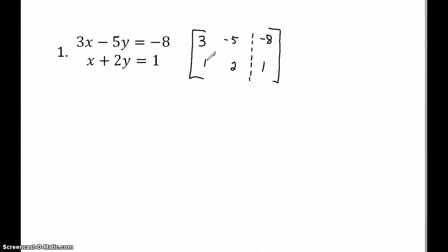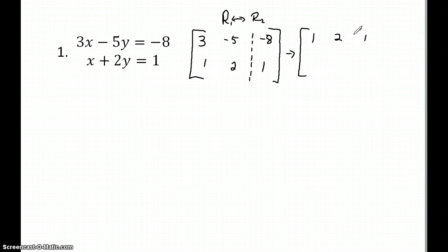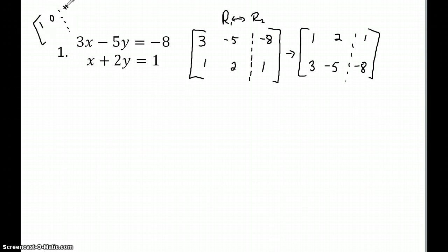We want a one here first, so I'm going to flip these two rows — I'm going to switch row one with row two. So I'm going to have one, two, one, and three, negative five, negative eight. Now I have a one in the top, which is what I wanted. The goal is to get one, zero, and some number, then zero, one, and some number. So we're going to get the one first, then the zero, then move on to get the next one, and then get the zero.